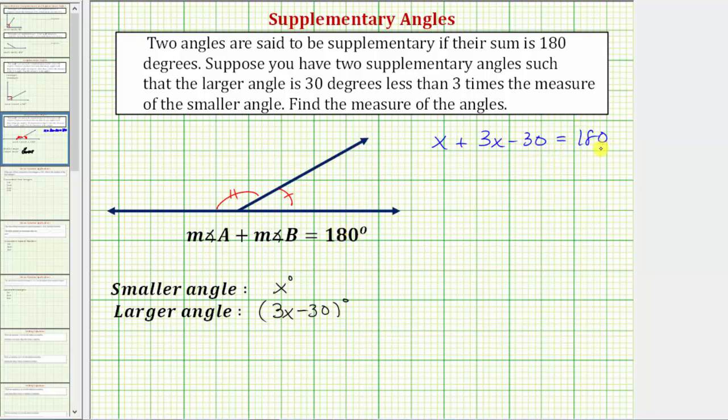And now solving for x, the first step is to simplify the left side. So x plus three x, or one x plus three x is four x.